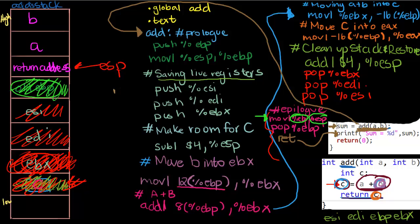I know it took a couple videos, but we're done, we're finally done. Before I go — remember, once your function terminates, ESP should be pointing to the return address, or else when it hits this ret, it wouldn't know which address to go back to. Thanks, see you in the next video.